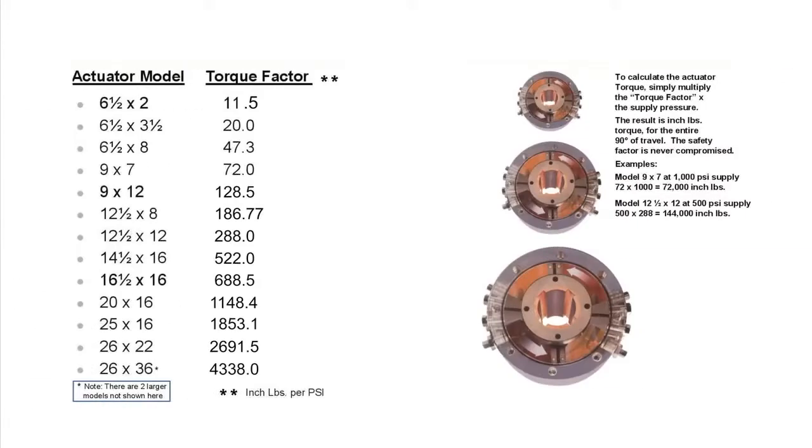Regarding the subject of torque here's a table that I've created to show the torque factor for each model. The torque factor is multiplied by the supply pressure to the actuator. I give a couple examples here. The model 9x7 has a torque factor of 72. So if my supply pressure is 1000 psi the actuator torque produced at that pressure is 72,000 inch pounds. 72 times a thousand.